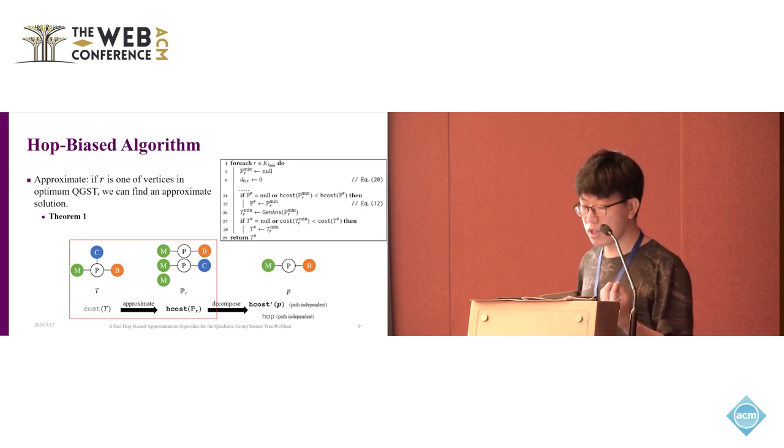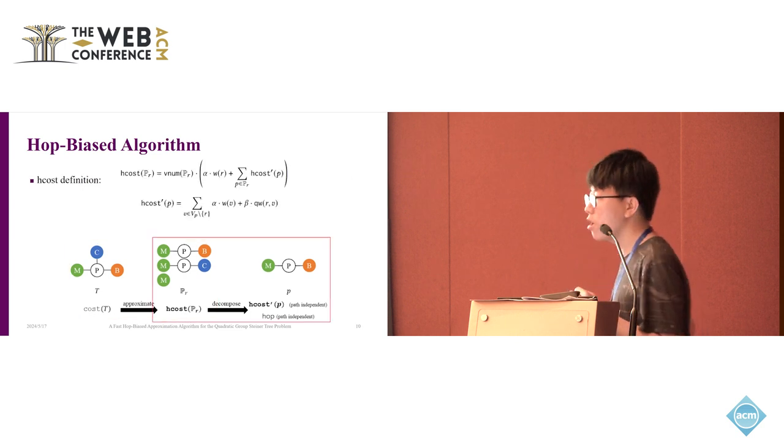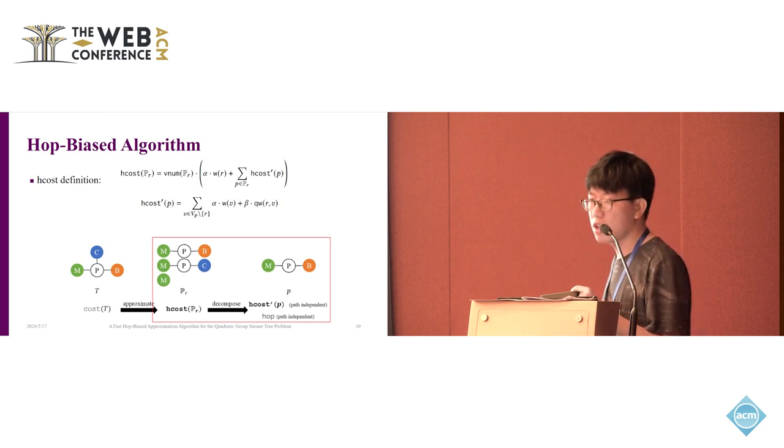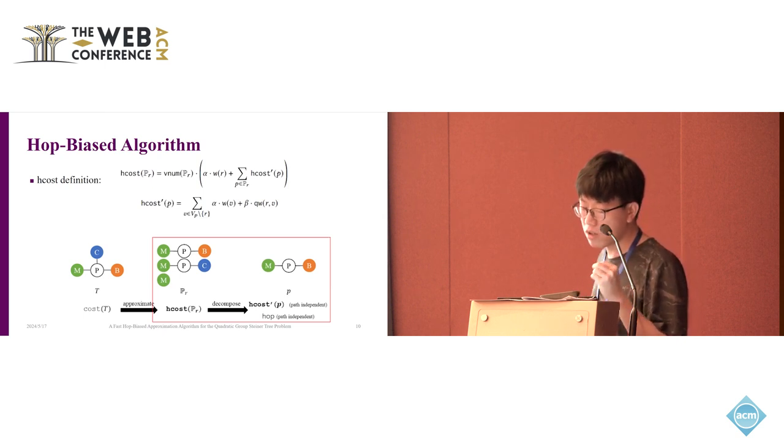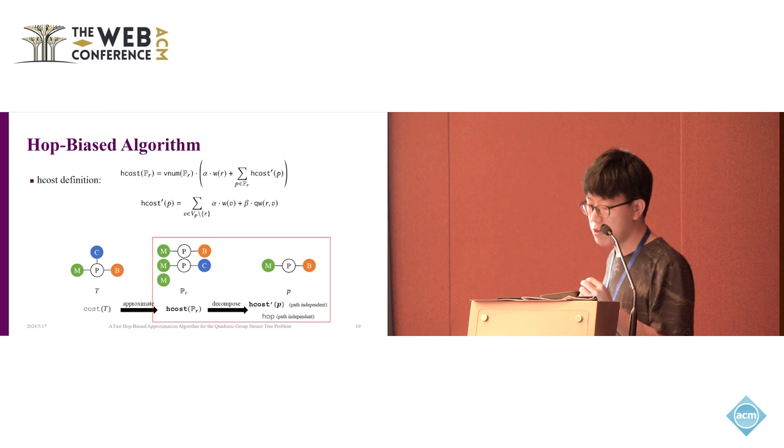The last question is how to search the min-cost RPS. To deal with this problem, we should care about the definition of the H-cost. The definition of the H-cost is here. It is a product of two parts. The first part is the V-num-pr, the number of vertices in the RPS, which can be represented as the sum of the hops in RPS. The second part is the sum of the hops of paths in RPS.